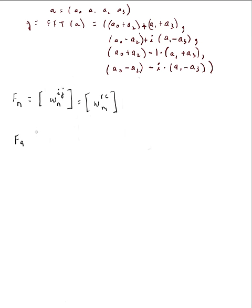For our 4×4 Fourier transform matrix, the zero row has exponents 0×0, 0×1, 0×2 — anything to the zeroth power is one, so the entire zeroth row is ones. Similarly, the zeroth column has exponents 0×0, 1×0, 2×0 — anything to the zero power is one, so the entire zeroth column is also ones.